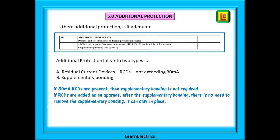Section 5 looks at additional protection. Additional protection is protection in addition to the fuses or breakers. There are two types recognised by the wiring regulations: protection by 30 milliamp RCD, and supplementary bonding of all exposed and extraneous metalwork in a location. Supplementary bonding and main bonding are two different things — don't get them confused. If 30 milliamp RCDs are present, supplementary bonding is not required. However, if RCDs are added as an upgrade to an installation that already has supplementary bonding, there is no need to remove it — it can stay in place.